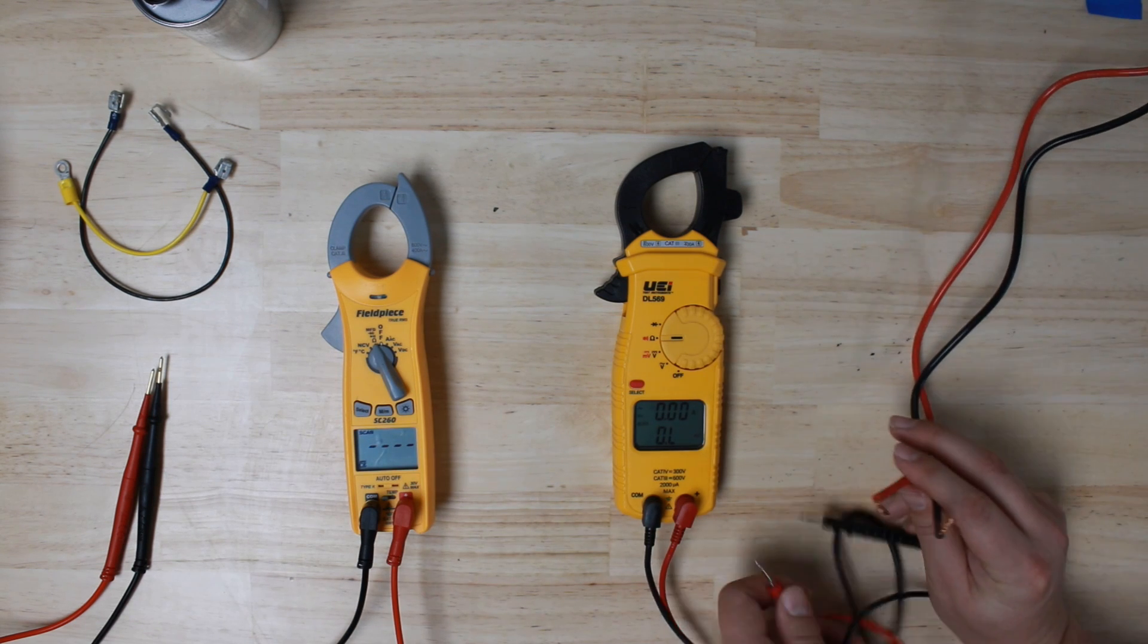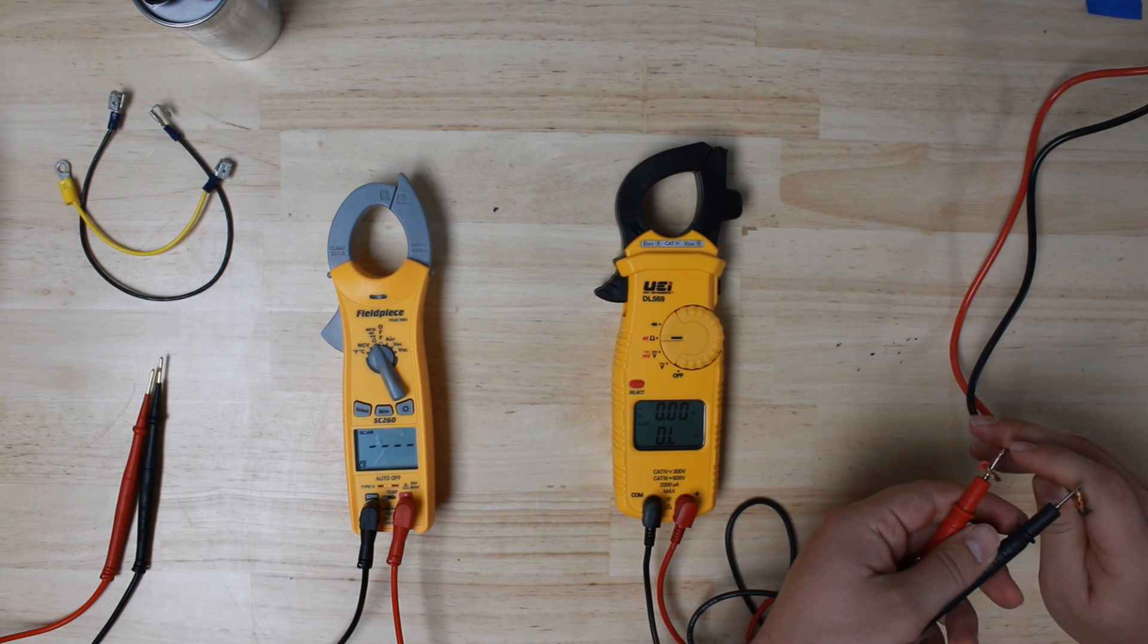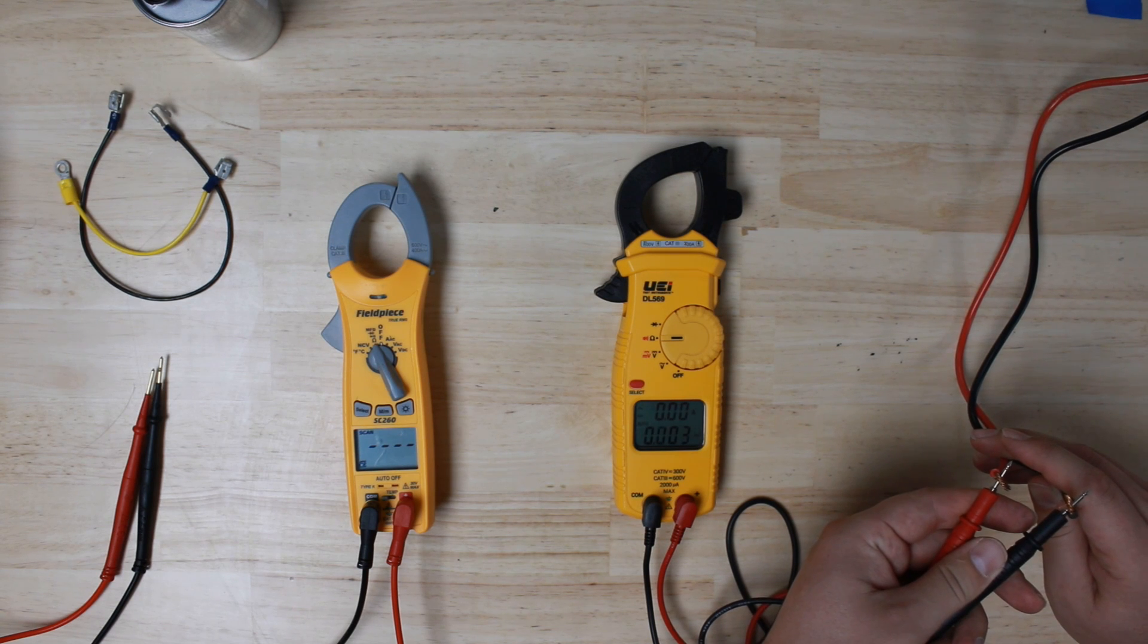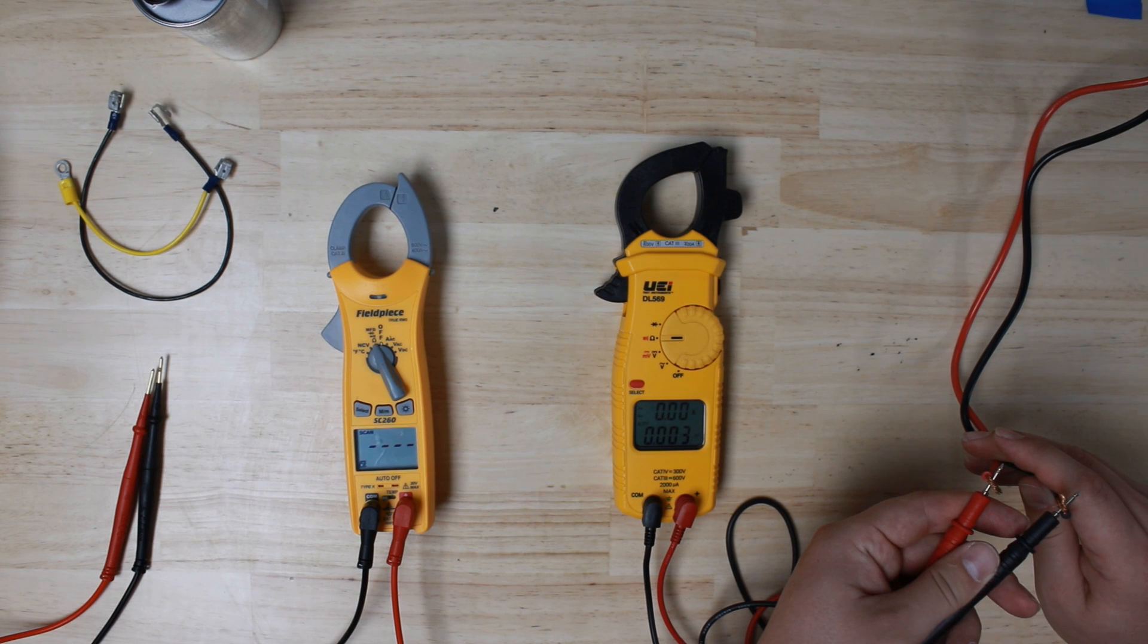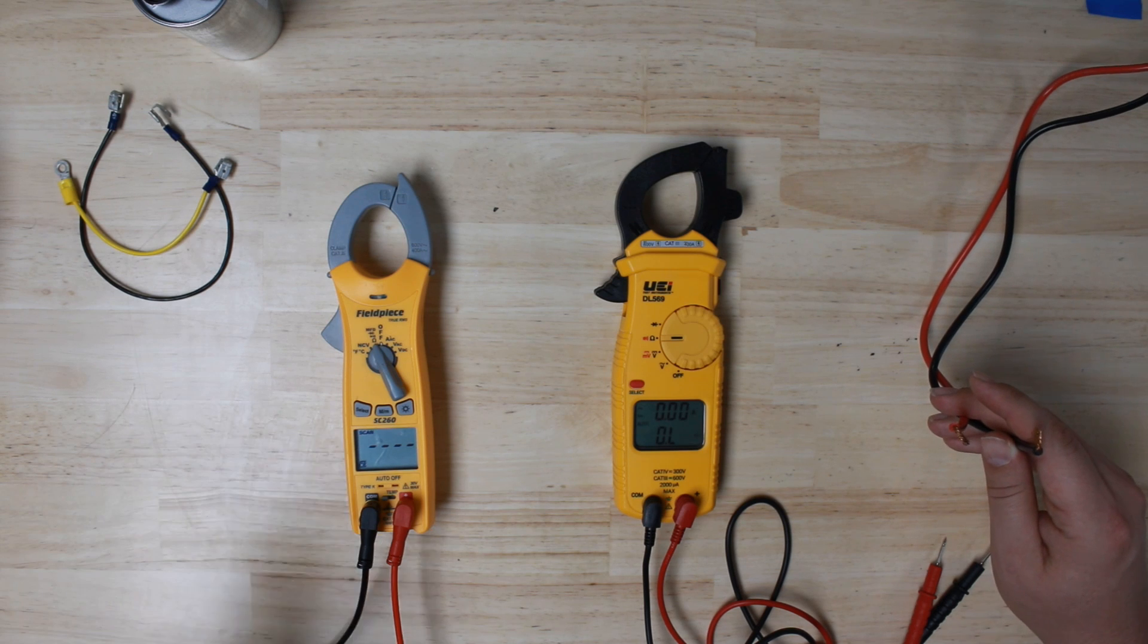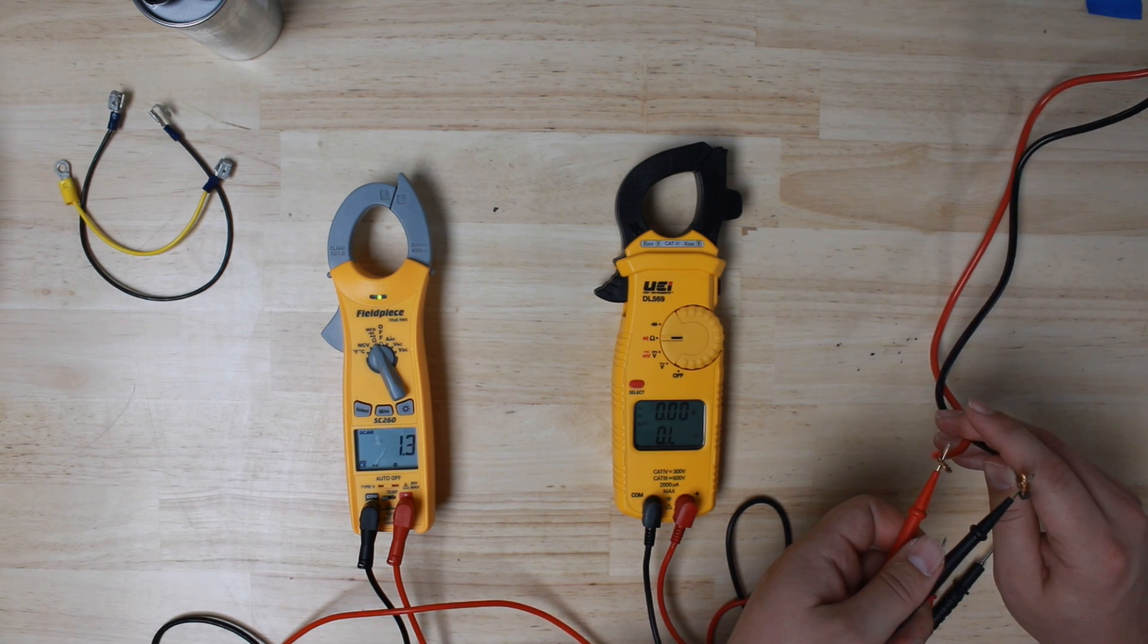We've got a blower motor here off screen that we can measure real quick. This is set to auto right now, so you'll notice the numbers jump around for a bit as it tries to figure out how to measure the resistance on here for the UEI. It'll be the same thing for the Fieldpiece.